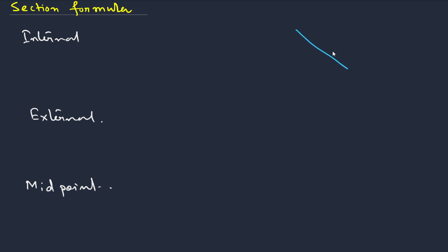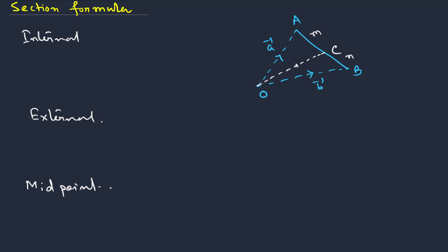For internal division: suppose there are two points A and B, O is the fixed point, a bar and b bar are their position vectors. If another point C lies between A and B and divides AB in the ratio m:n, then C is said to divide AB internally. The position vector r bar of C is given by: r bar = (m·b bar + n·a bar) / (m + n).